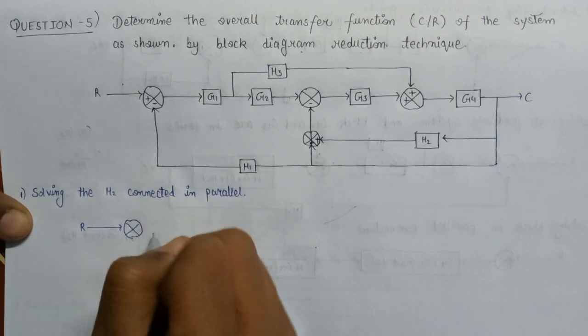Now G2 and G3 are in series with each other, and h3 comes in parallel. Since G2 and G3 are in series, the equivalent gain becomes G2·G3. And h3 is connected in parallel, so we can write G2·G3 plus h3 as the equivalent gain. So we are solving G2 and G3 in series, and h3 in parallel.